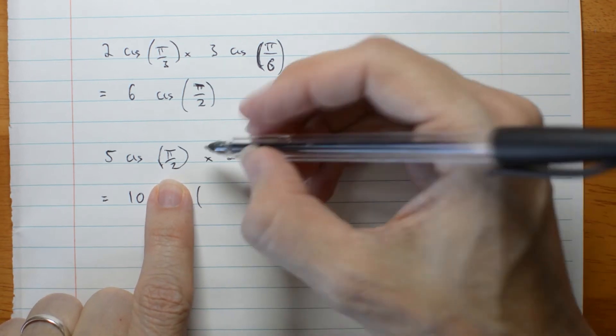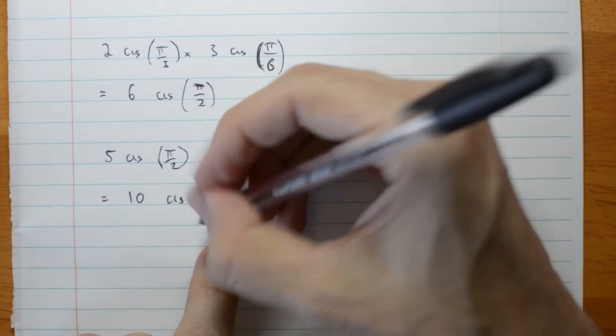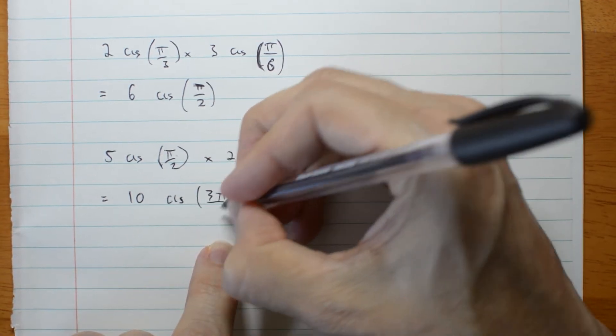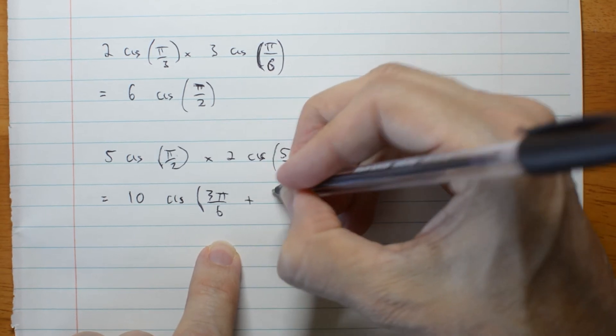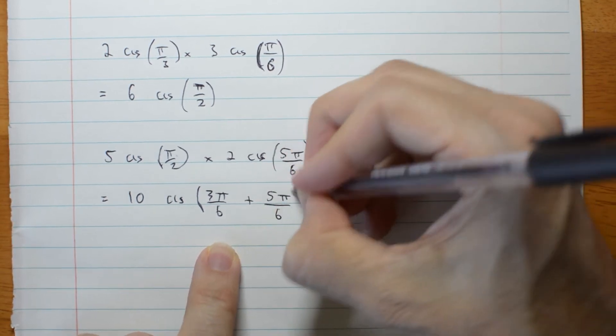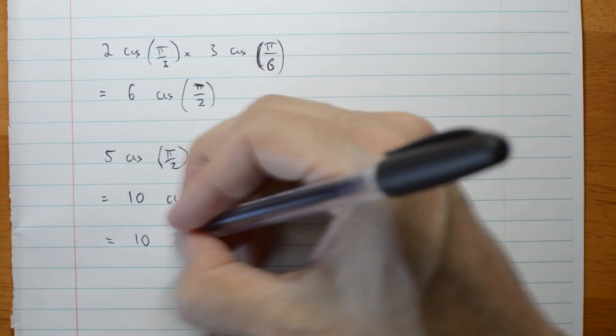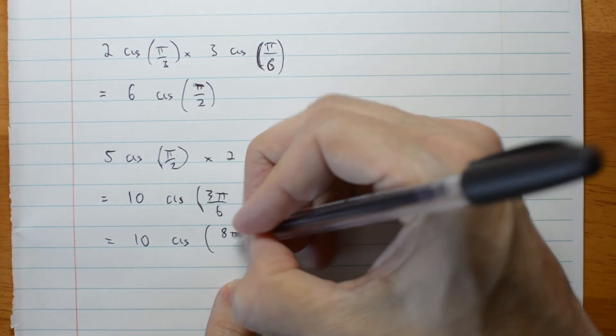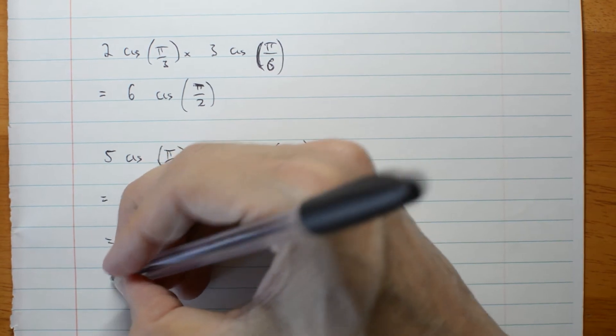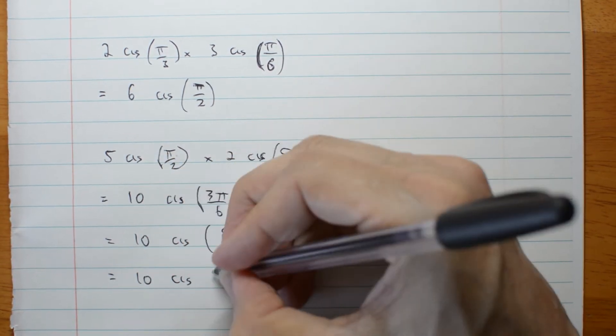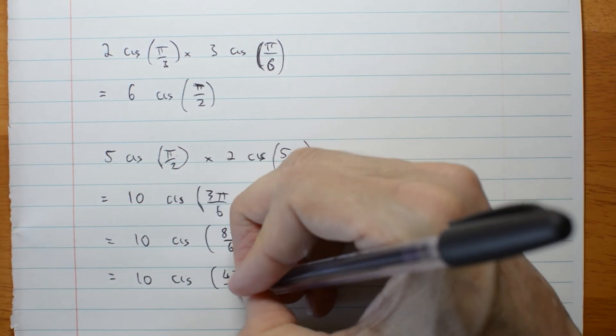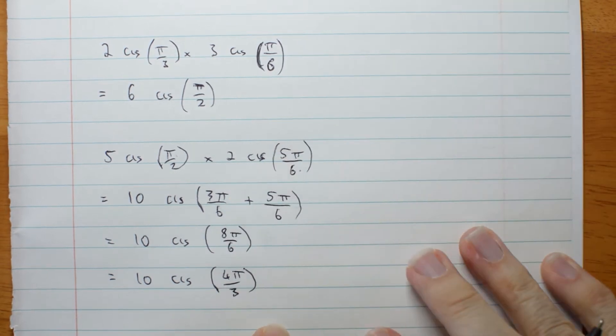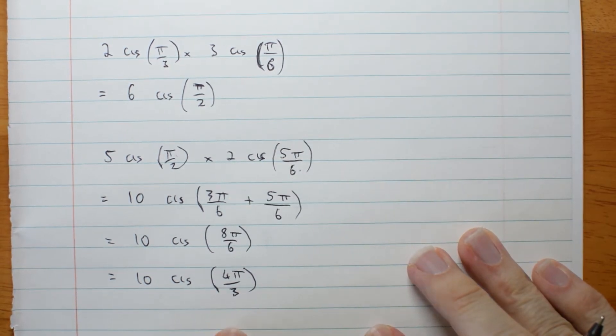This may not be quite as easy to see. π/2 in sixths is 3π/6 plus 5π/6, which is 3 and 5 is 8π/6, which I can simplify as 4π/3. But there's still a problem here.